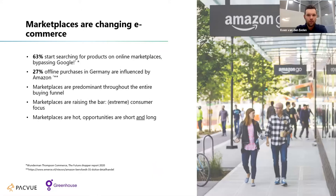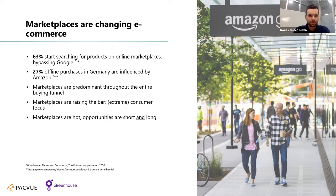Before we go into depth on the DSP, I'd like to paint a picture of the changing market of e-commerce and the big role marketplaces play in it. Here are some key figures: 60% of people start searching for products on online marketplaces, already bypassing Google. Research shows that 27% of offline purchases are influenced by Amazon, so there is a big online-offline effect. Marketplaces are predominant throughout the entire buying funnel, raising the bar especially on consumer focus, and the opportunities are both short and long term — investing in marketplaces makes you future ready.